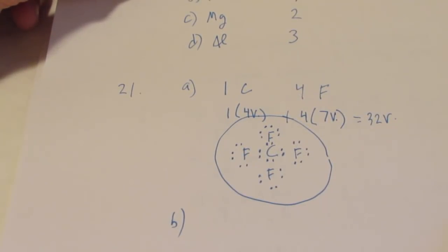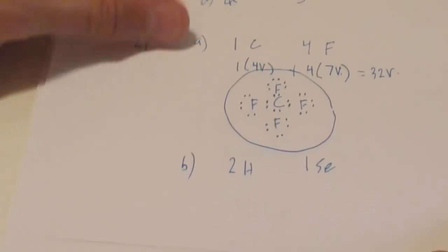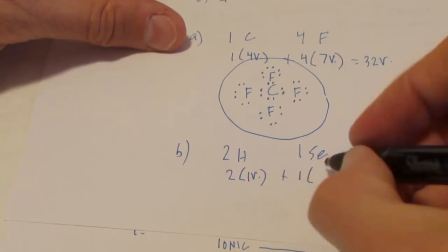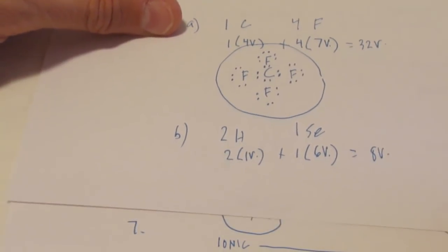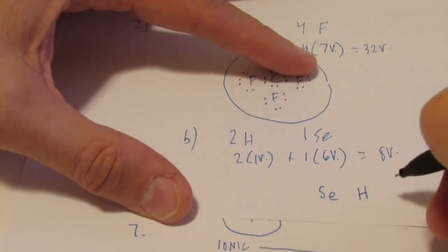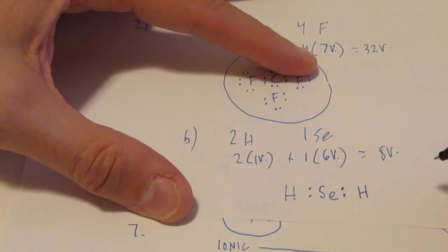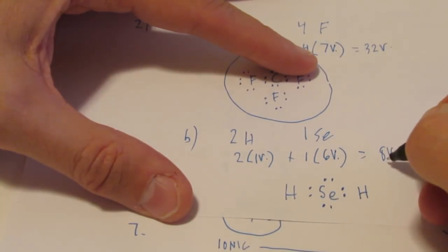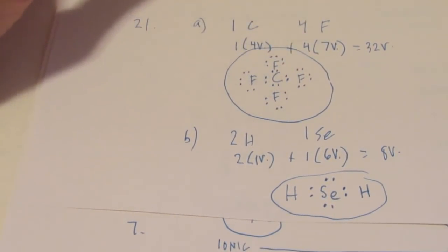That is my Lewis structure for 1 carbon and 4 fluorines. Let's do letter B — that's 2 hydrogens and 1 selenium. Each hydrogen has 1 valence, it's in group 1. Selenium is 1 atom in group 16, so it has 6 valence. I have 8 valence electrons to work with. Nature tends to be symmetrical, so we'll put selenium in the middle, hydrogen on one side and hydrogen on the other, and put a pair between selenium and each hydrogen. Hydrogen's satisfied — it only needs a pair as an exception to the octet rule. Then we complete selenium's octet with the remaining valence. I have 8 dots, and that's my Lewis structure for 2 hydrogens and a selenium.